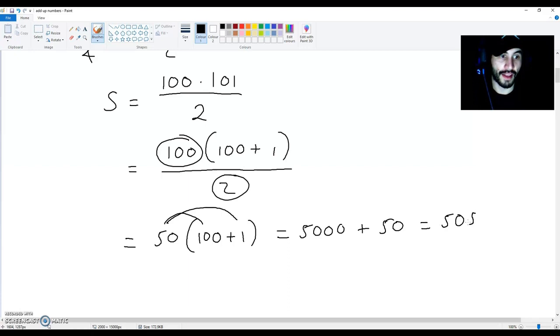So, the sum of every number from 1 to 100 is 5050.